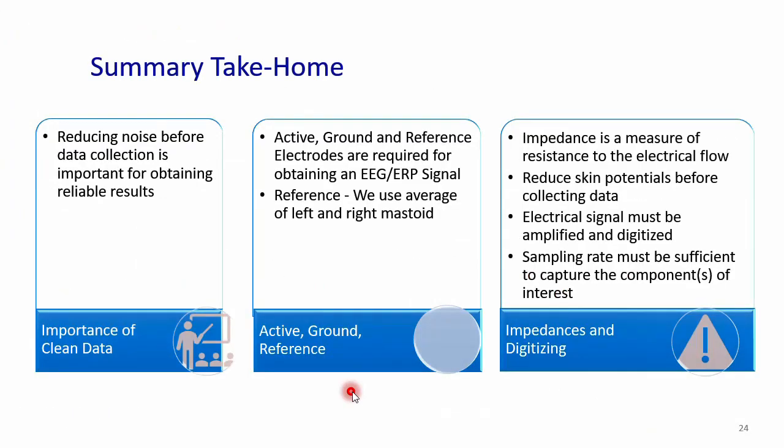To summarize: we reduce noise before and during data collection with impedances to get the cleanest possible signals. This means we have to use a reference electrode, lower electrode impedance at all electrodes, and use an adequate sampling rate in order to capture our component of interest.